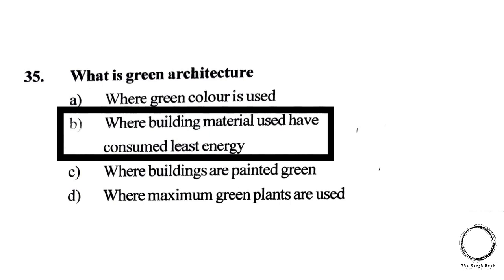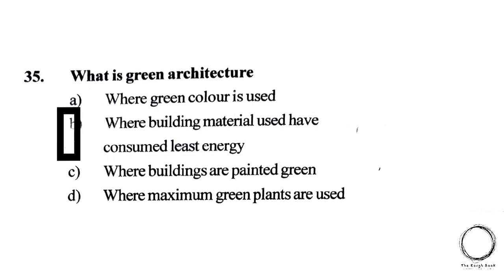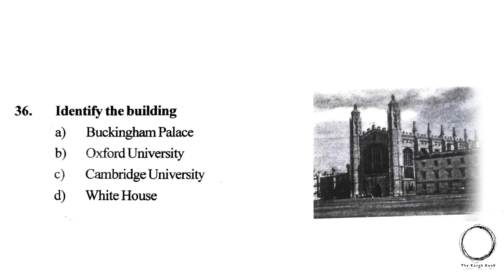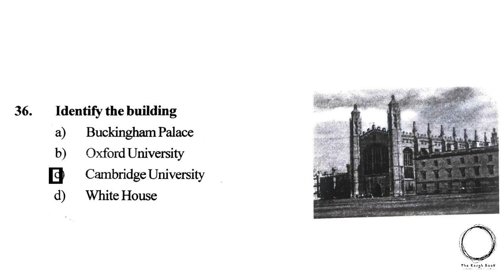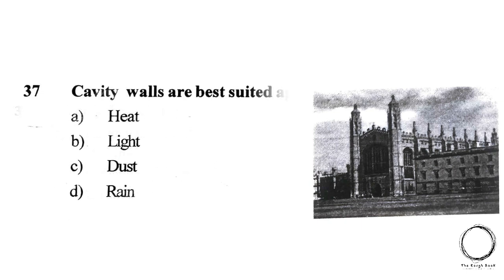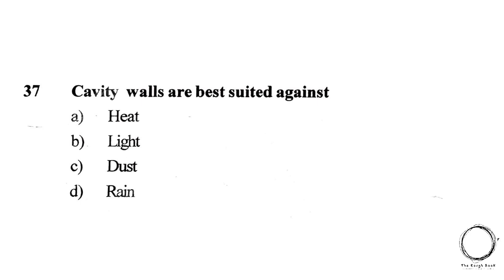Next question: Identify the building from the picture — A) Buckingham Palace, B) Oxford University, C) Cambridge University, D) White House. The answer is C) Cambridge University. Next question: Cavity walls are best suited against — A) Heat, B) Light, C) Dust, D) Rain. The answer is A) Heat.